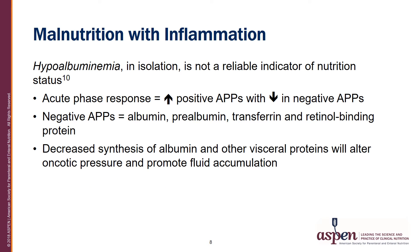Malnutrition with inflammation has a significant impact on circulating proteins. Hypoalbuminemia in isolation is not a reliable indicator of nutrition status. In the acute phase response to inflammation, there is an increase in production of the positive acute phase proteins and a decrease in the negative acute phase proteins. This process is called hepatic reprioritization. The negative acute phase proteins are albumin, prealbumin, transferrin, and retinal binding protein. Decreased synthesis of albumin and other visceral proteins alters oncotic pressure and promotes fluid accumulation, leading to edema.